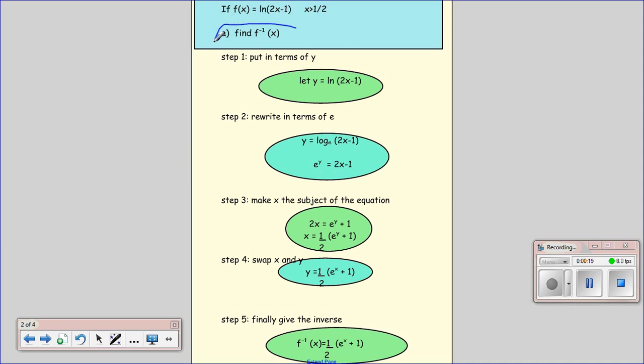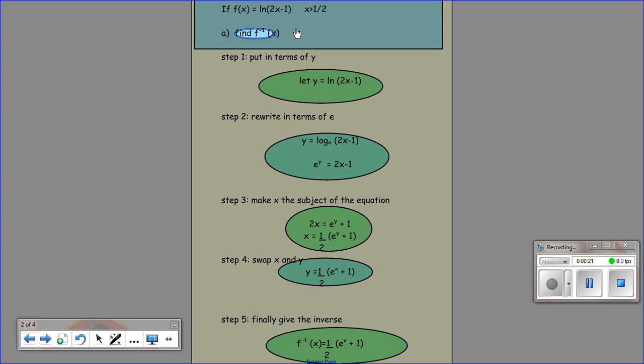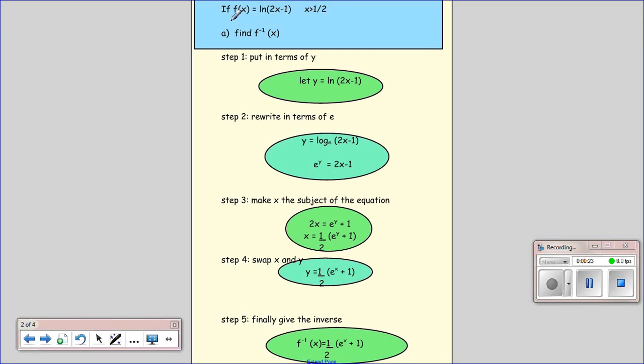So the first bit wants us to find the inverse of our function. Our function looks like this: f of x equals ln of 2x minus 1, and x has to be bigger than a half. X is bigger than a half because we must have this thing as positive because you can't find the log of a negative number.